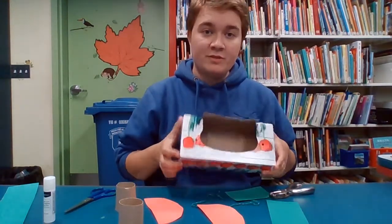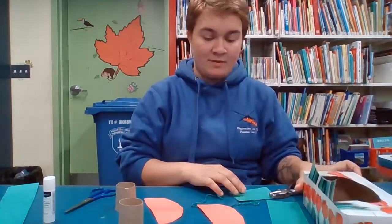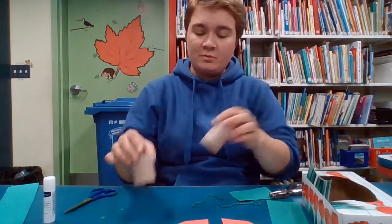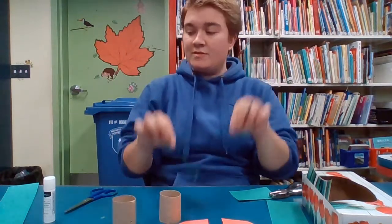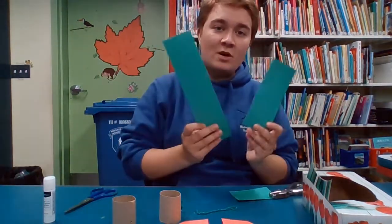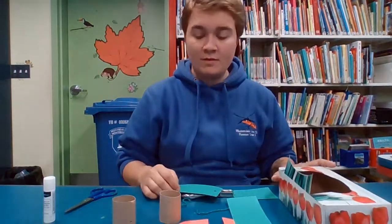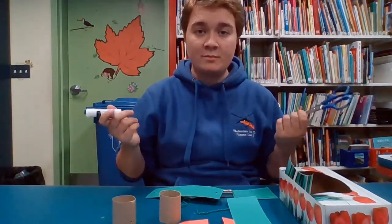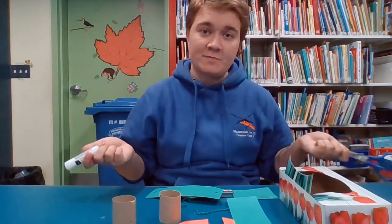For this craft you will need a tissue box, two half circles of paper, two pieces of cardboard tube, two pieces of string, and some long pieces of paper. You will also need some scissors and some glue, and maybe some scotch tape or liquid glue, that's better for you.